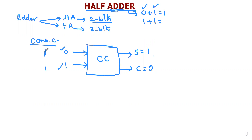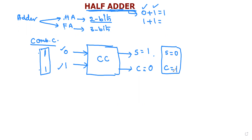When 1 plus 1 is added, you get 2, which requires two bits to represent. Every time you change the input, the corresponding output will change. The circuit which provides output depending only on the present applied inputs is called a combinational circuit.